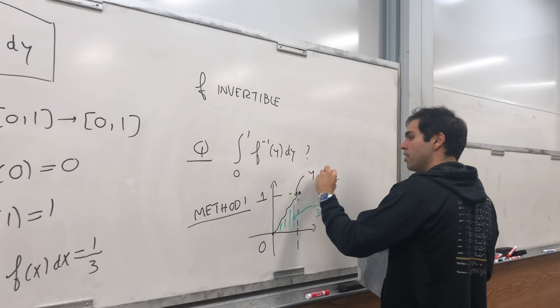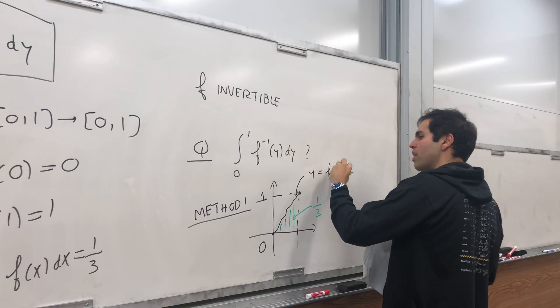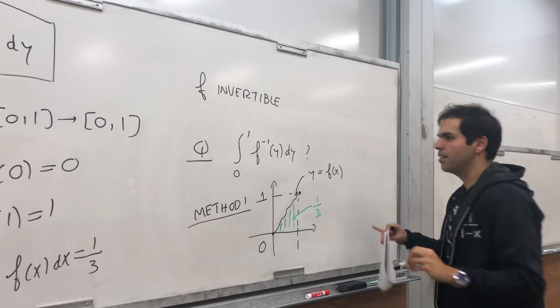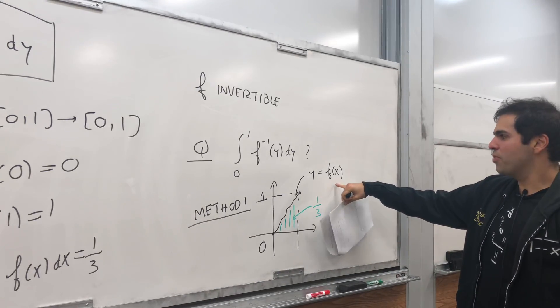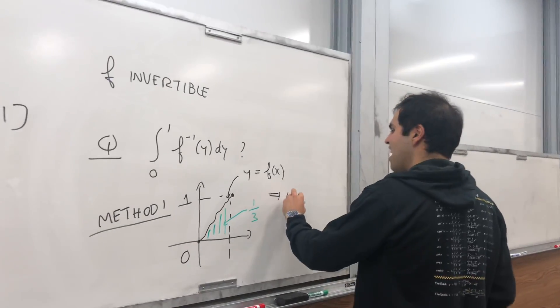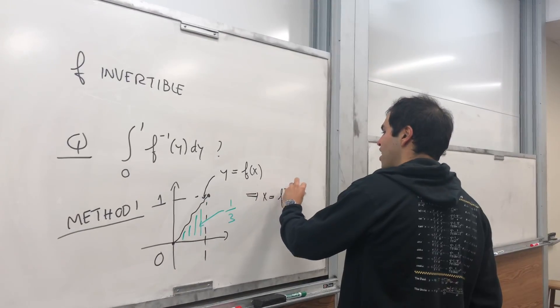And here's a cool thing. This graph, right, is y equals f(x). So in particular, because f is invertible, we can solve for x, and we get x is f inverse of y.